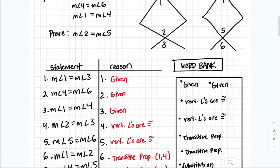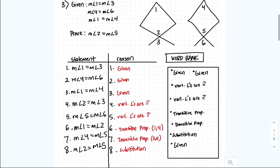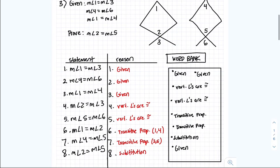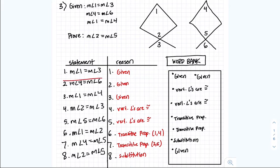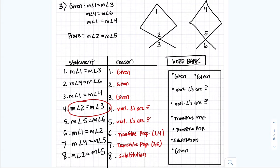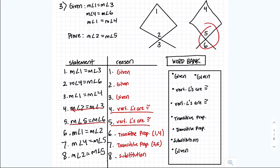This one looks like a lot, but just take it one step at a time. The first three are all given because they are written in the given statement. For step 4, measurement angle 2 equals measurement angle 3 — when you look at the angles, angle 2 and angle 3 are vertical angles, and vertical angles are congruent. Same thing for the next line: since those are vertical angles, vertical angles are congruent.